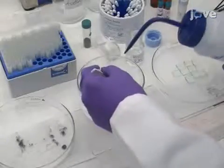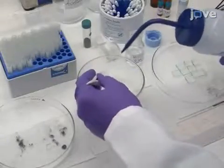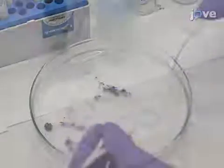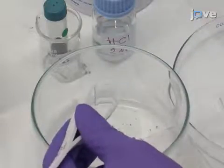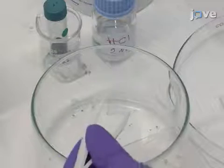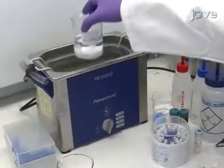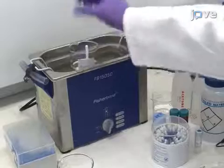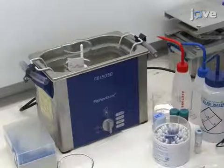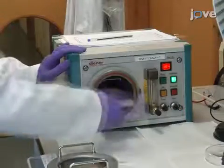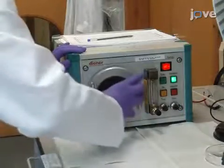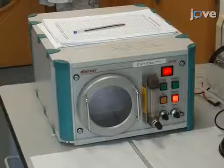Rinse the etched FTO substrate with distilled water and then remove the tape. Wash the etched surface in a 2% weight-by-volume solution of alkaline liquid detergent concentrate in water. Sonicate the FTO substrate for 10 minutes each in acetone and isopropanol baths in sequence. Treat the FTO substrate in an oxygen plasma cleaner for 15 minutes to finish cleaning the etched substrate.